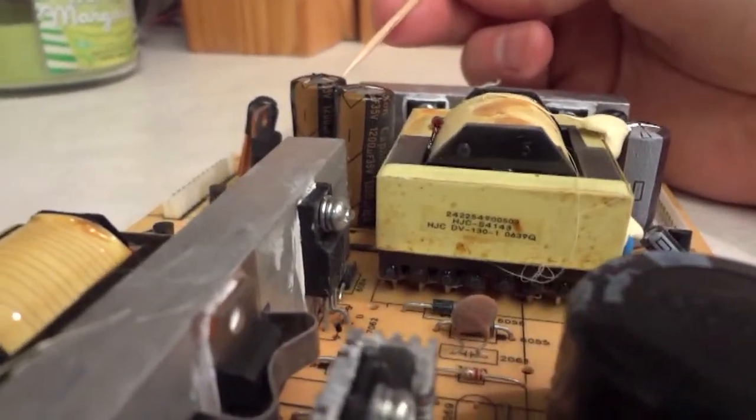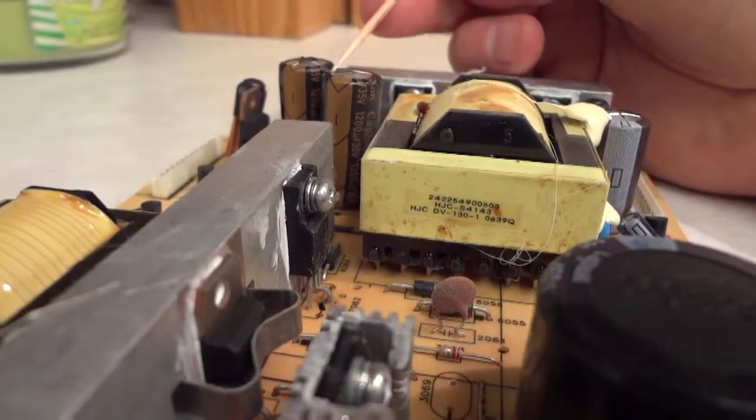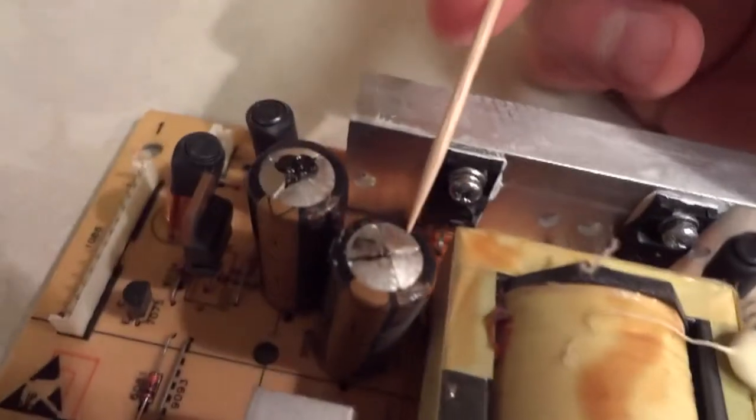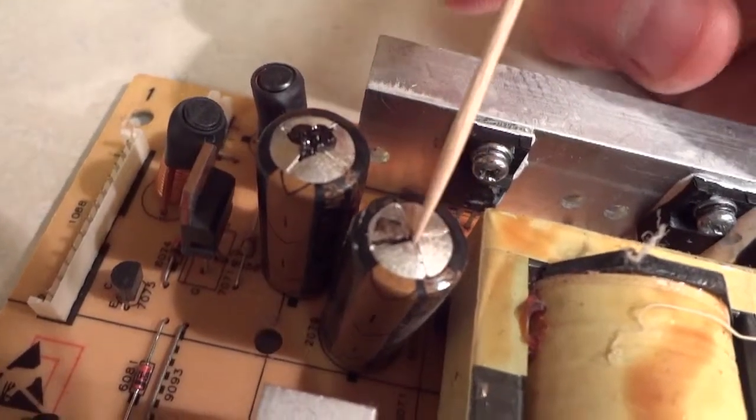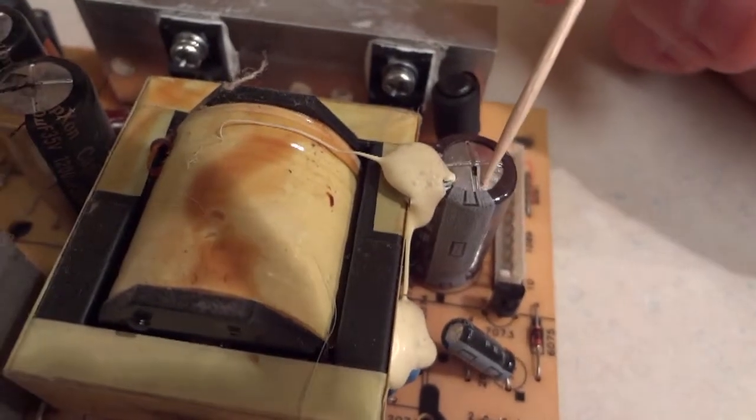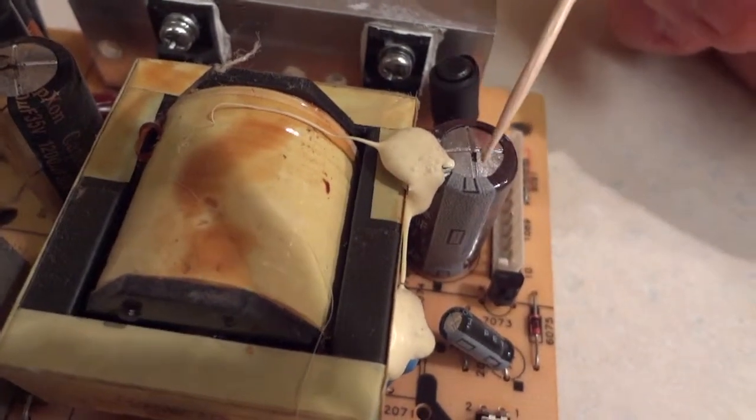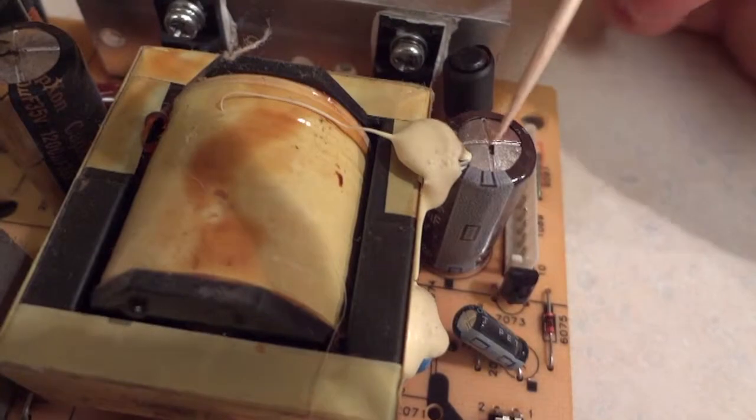This one's slightly less bulged but still, you can see the stuff coming out there. The top of this one actually kind of looked like this but I scraped it off just to see. This one over here you can see a little bit of the black, so this one's not as bad as those two over there.